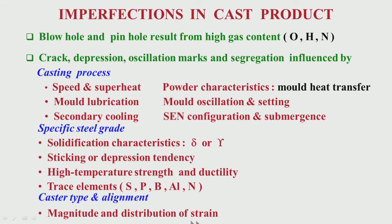The caster type and alignment determine the magnitude and distribution of strain on the solid shell. The casting process involves speed, which determines to what extent solidification will take place and how fast the solid shell moves. Another important parameter is the temperature of the superheat — how much above the liquidus temperature the liquid steel is. Speed and superheat both have effects on the cast structure.